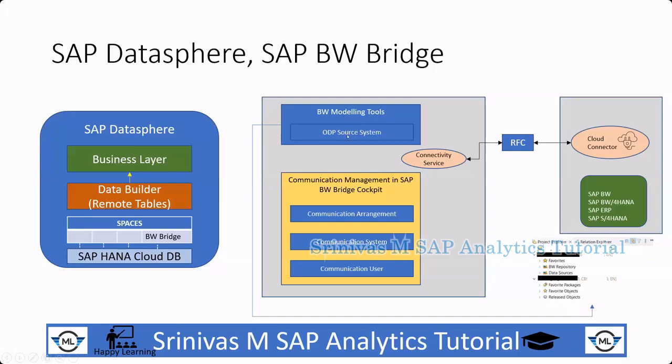In the Eclipse tool, when we configure the BW project, we can see a data source section. In the data source section we can create source system connections from on-premise systems — either SAP BW, BW4HANA, ERP, or S4HANA. The cloud connector serves as a link between the on-premise source systems and your SAP BW Bridge.